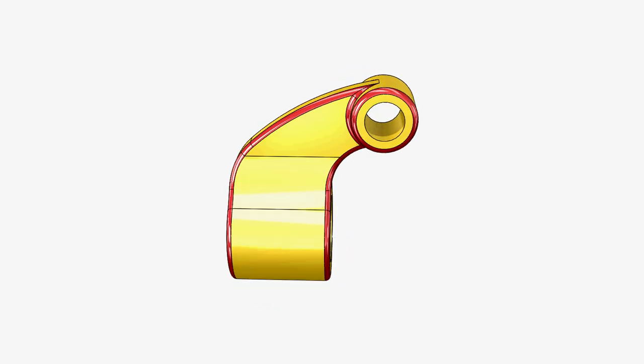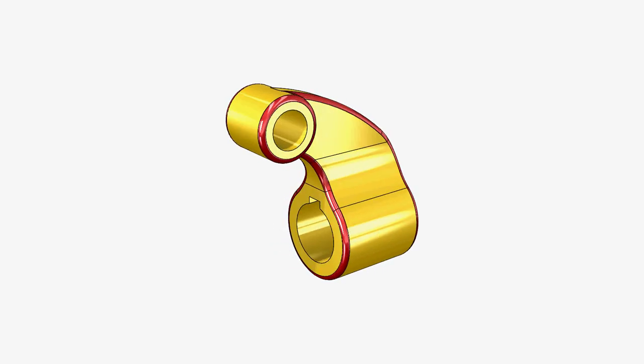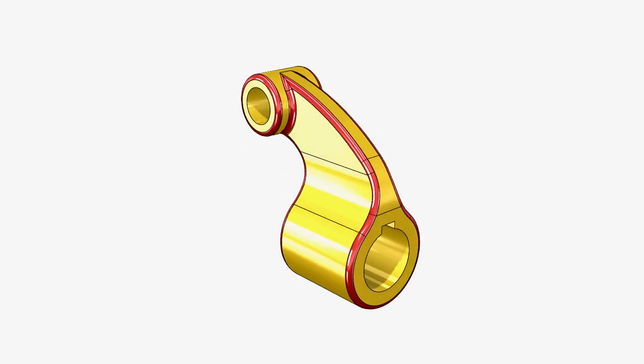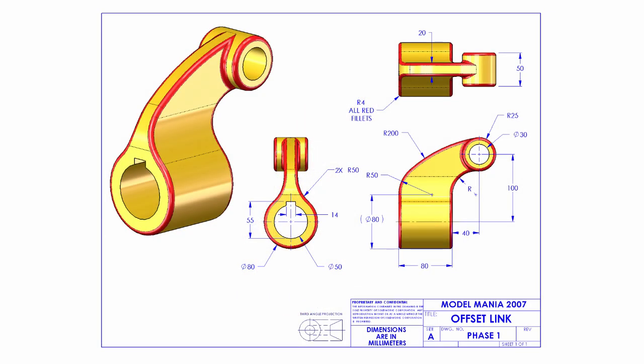In this video we're going to take a look at the Model Mania Design Challenge from 2007. If you're unfamiliar with Model Mania, it's a design challenge held every year at SolidWorks World where attendees are given a drawing and tasked with creating the part in SolidWorks both as quickly and as accurately as possible. When they're done, they're given a second drawing, or Phase 2, where they're required to make several changes. We're going to look at how to create this part two different ways: traditional methods creating each feature one sketch and one feature at a time, and a second way using contour selection.